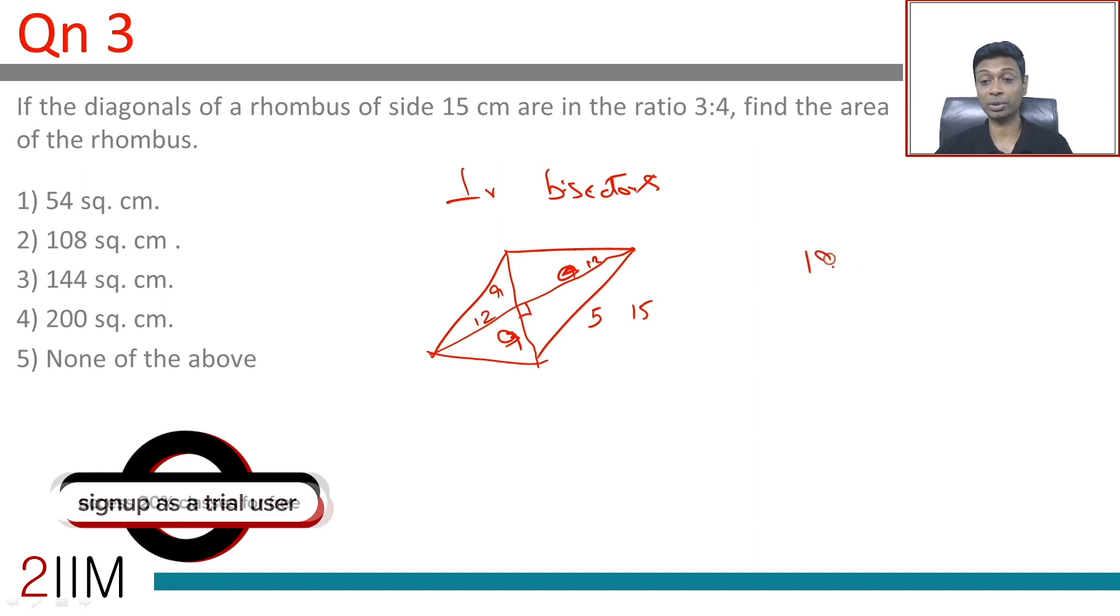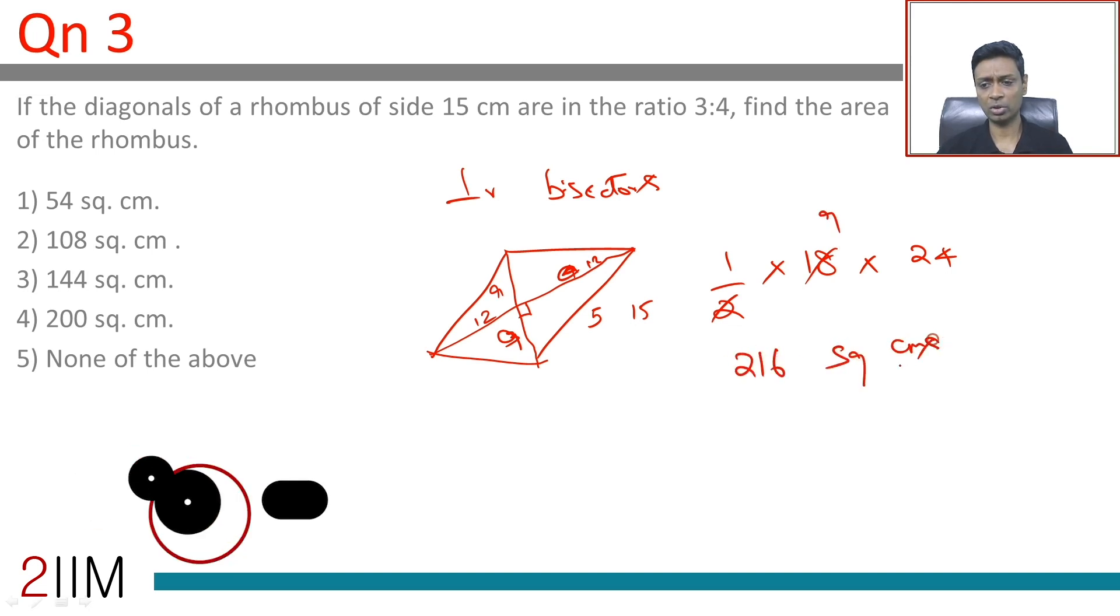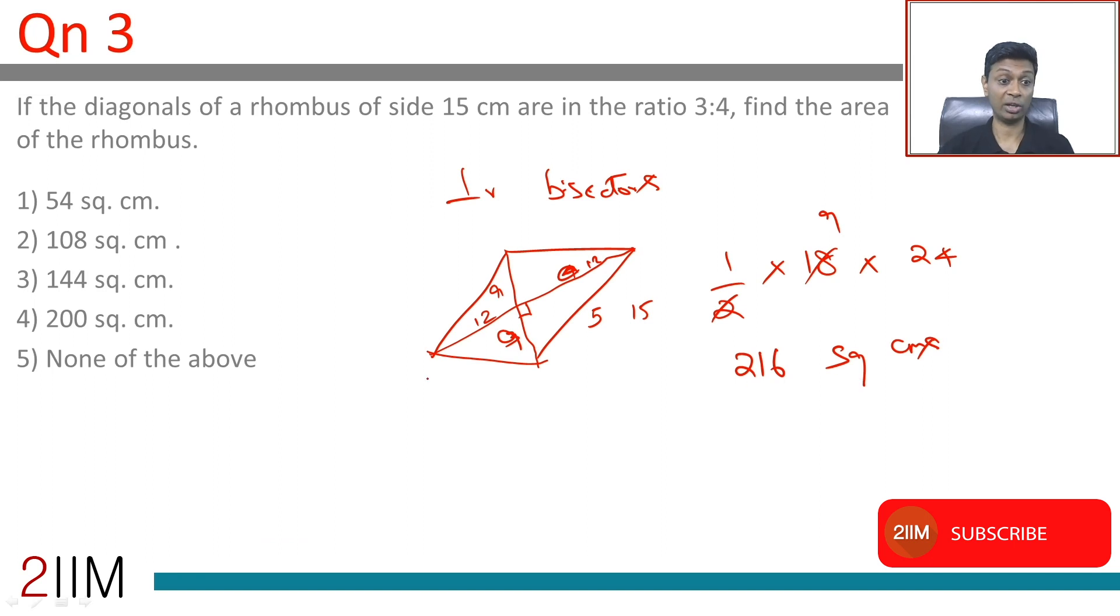The diagonals of the rhombus measure 18 and 24. Area is half into product of diagonals, or 9 into 24, which is 216 square centimeters. Let's look for that choice - it's not available. Dangerous! I hate these 'none of the above' ones.